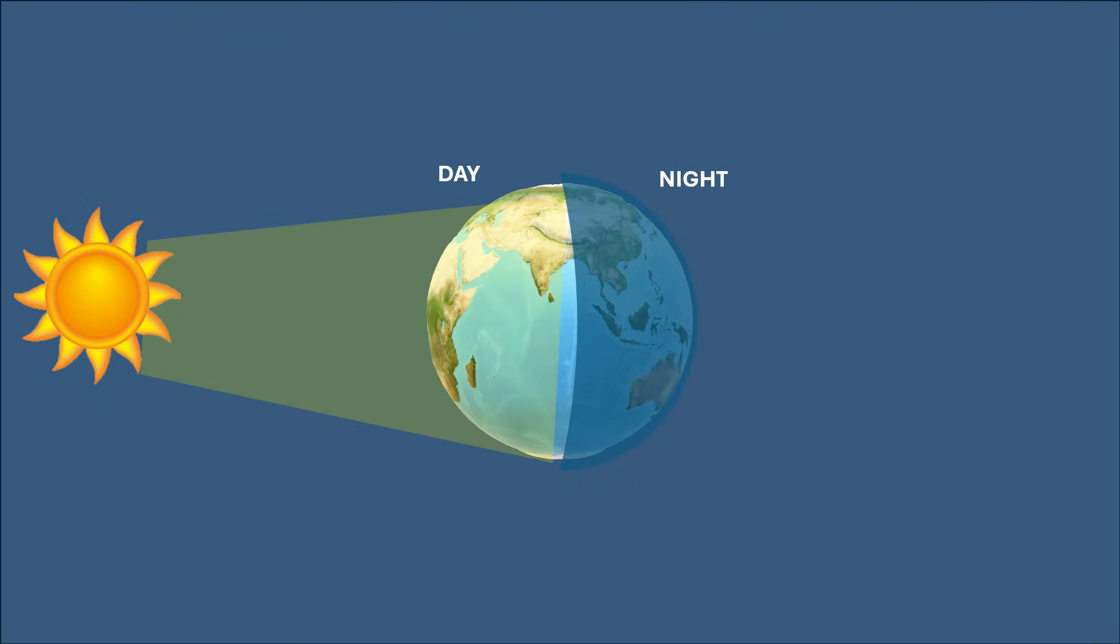Imagine the sun is shining from one side and Earth is rotating. So the side of the Earth which is facing the sun has day. The side that is away from the sun has night. As the Earth keeps spinning...